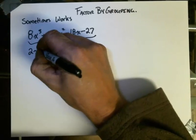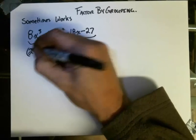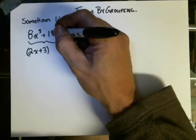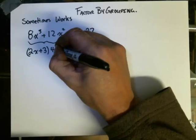I see that there is a 2x plus 3 in the first two terms, and that's being multiplied obviously by a 4x.